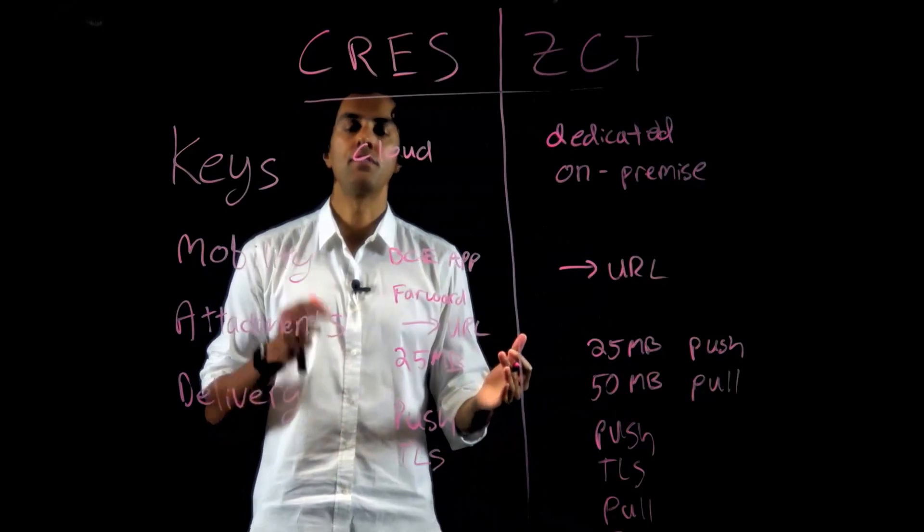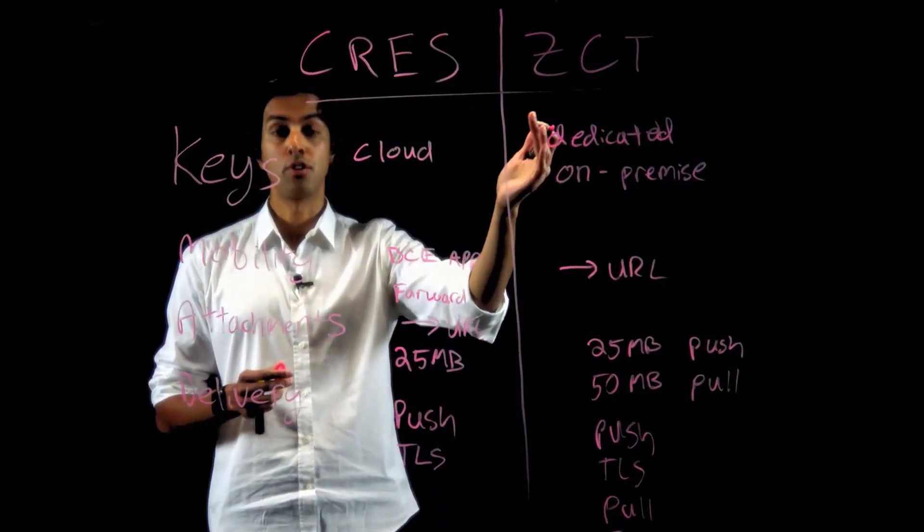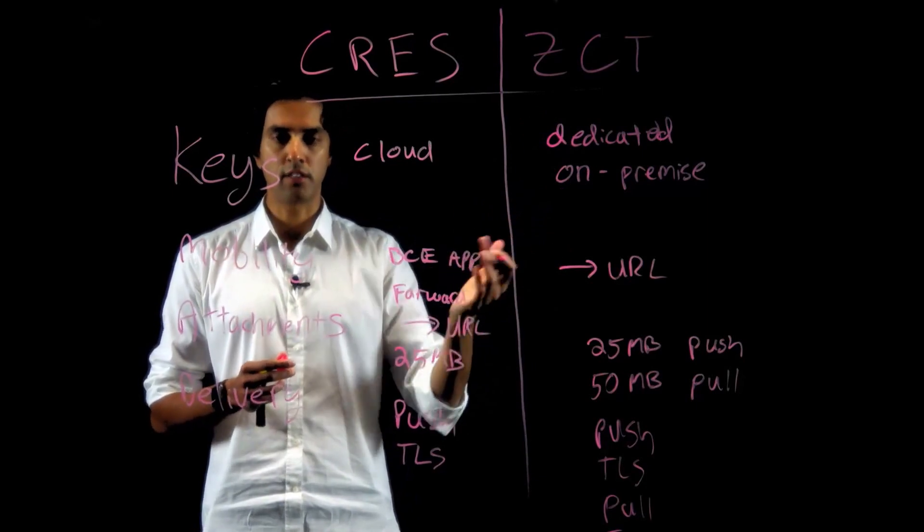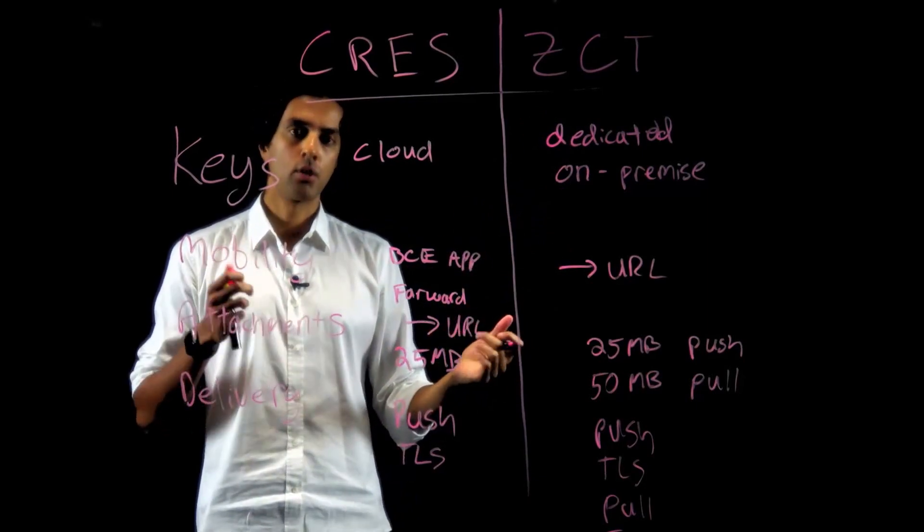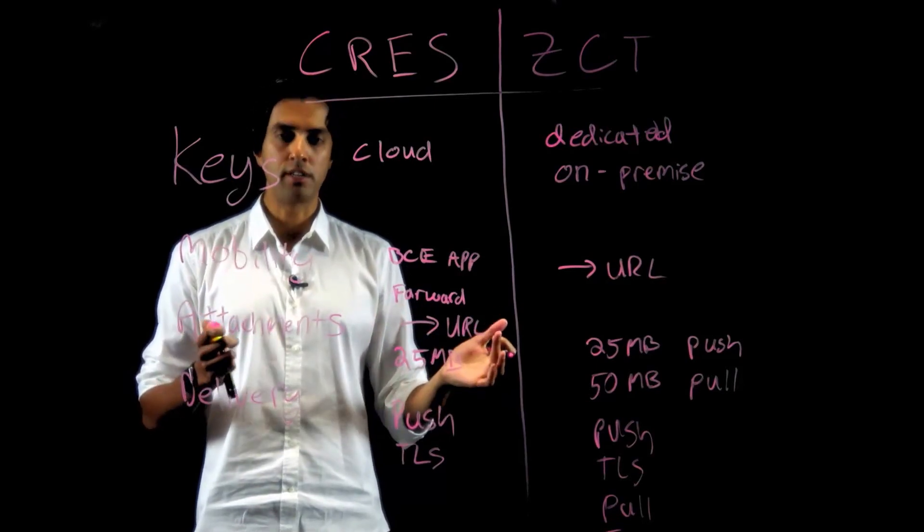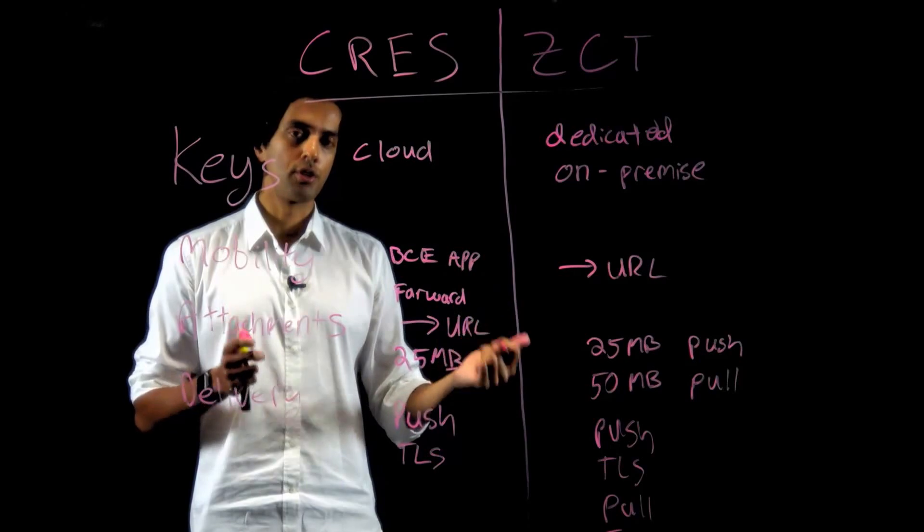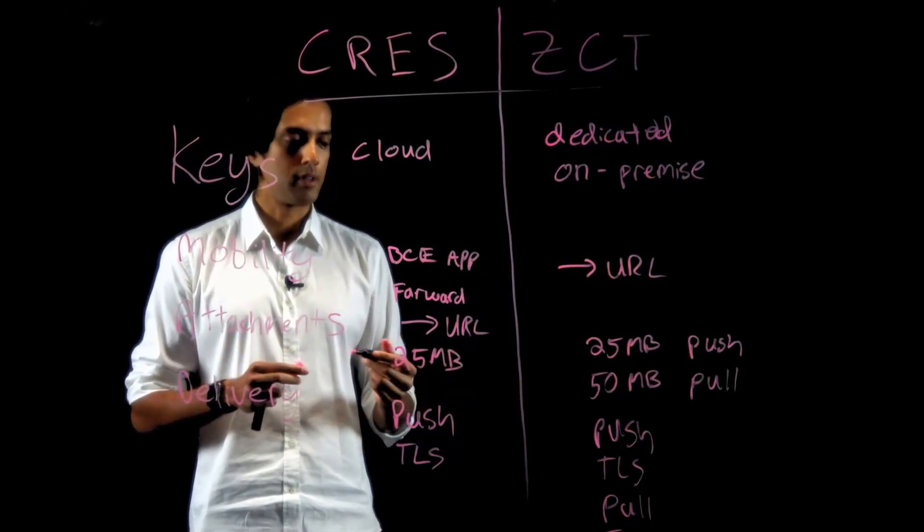Transparent delivery means if the sender and the recipient are both behind a ZCT or another solution that has ZIX technology, then they're able to send and receive messages as if they were sending or receiving plain text messages. They will be encrypted in transit and delivered to their inbox securely.